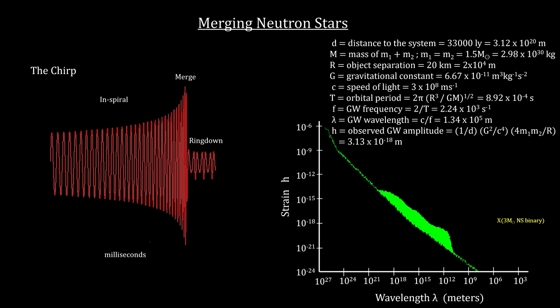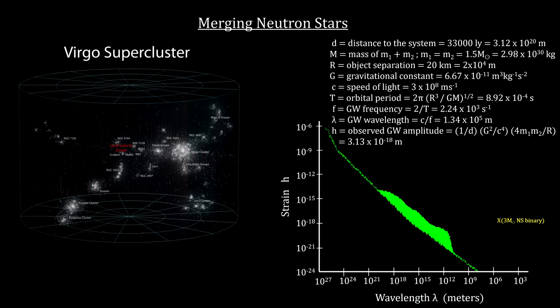But coalescing neutron stars are not common events. Astronomers estimate that there might be one of these neutron star mergers every 50 years inside the Milky Way. To get a higher rate, we have to move outside the galaxy into the Virgo supercluster, our local supercluster that we covered in the How Far Away Is It video book.